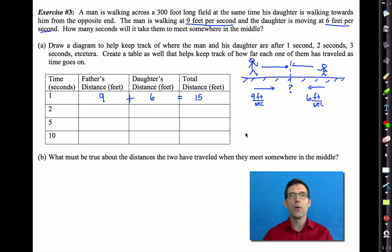Well, after two seconds, the father has walked nine times two or 18 feet. The daughter has walked six times two or 12 feet. And together they have walked a total of 30 feet. 18 plus 12.